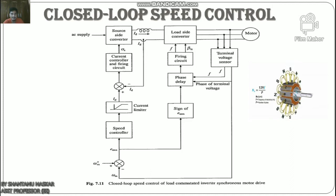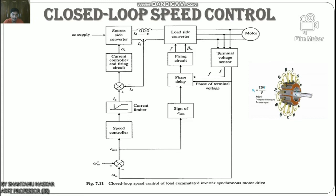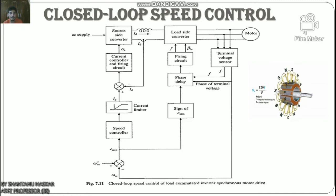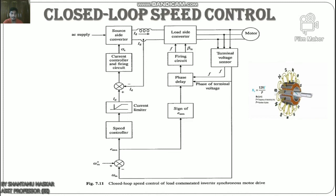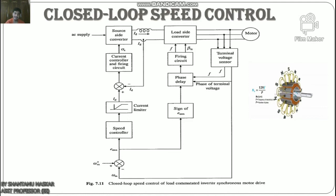When close to the desired speed, the current limiter desaturates and the drive settles at the desired speed with DC link current balancing motor and load torque. Similarly, a reduction in reference speed produces a negative speed error, setting βlc for regenerative braking. When the speed error changes sign, βlc is set for motoring and the drive settles at the desired speed. The key advantages of this drive are: high-efficiency four-quadrant operation with regenerative braking, high power ratings up to 100 MW, and ability to run at high speeds up to 6000 RPM. Prominent applications include high-speed and high-power drives for compressors, blowers, fans, pumps, conveyors, steel rolling mills, mainline traction, ship propulsion, and aircraft test facilities.